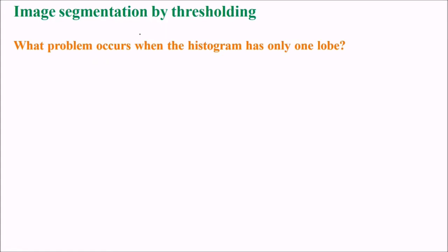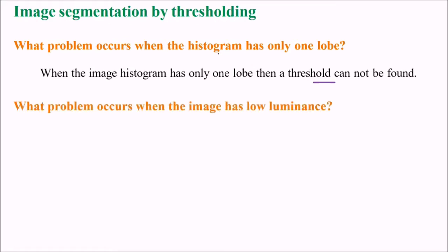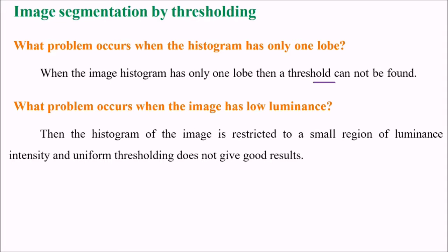Image segmentation by thresholding. What problem occurs when the histogram has only one lobe? When the image histogram has only one lobe, then the threshold cannot be found. What problems occur when the image has low luminance? The histogram of the image is restricted to a small region of luminance intensity and uniform thresholding does not give good results.